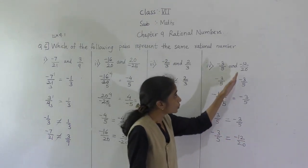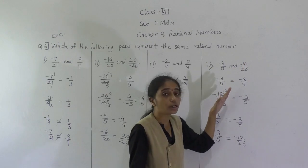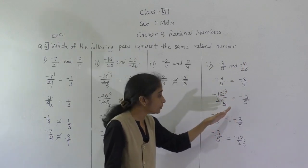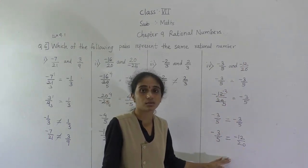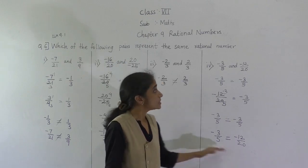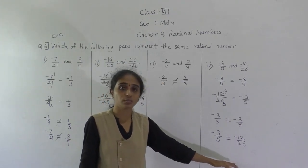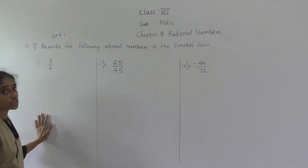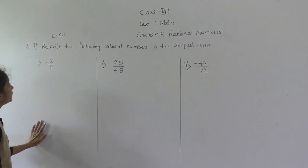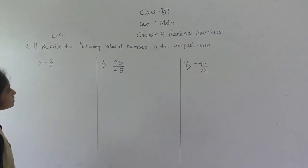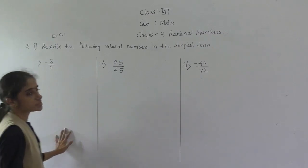So the method is: do the reduced term (simplest form) for each number and check whether both are the same. Let's now solve question number 7: rewrite the following rational numbers in the simplest form.